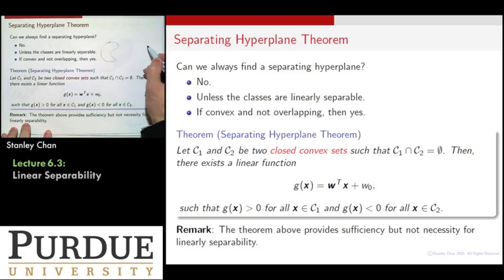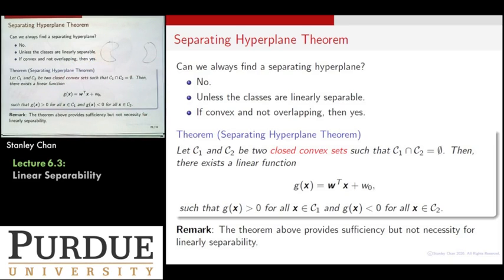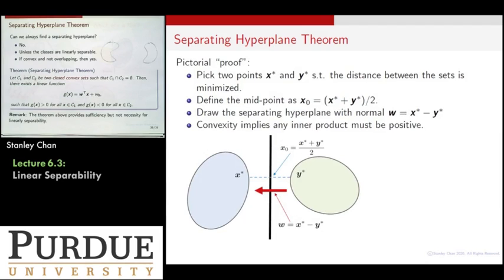One of the examples is this. You have two sets that are really far apart. They are non-convex, but since they are far apart, you can still cut them off. So having convex and non-overlapping is sufficient to make it happen. However, to make it happen, it's not required to have both convexity and non-overlapping.